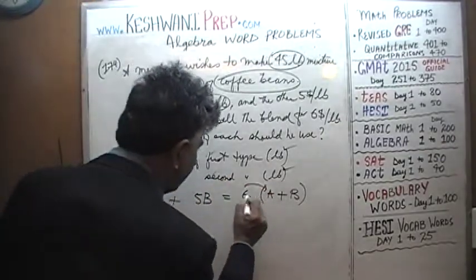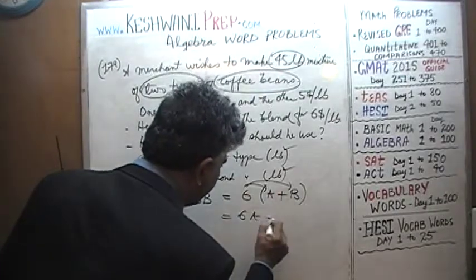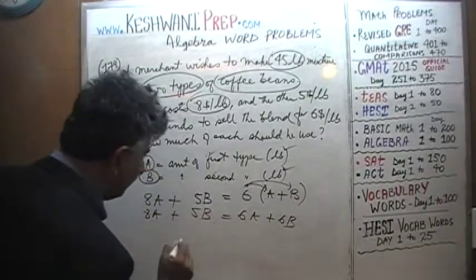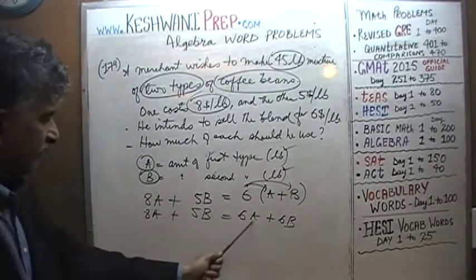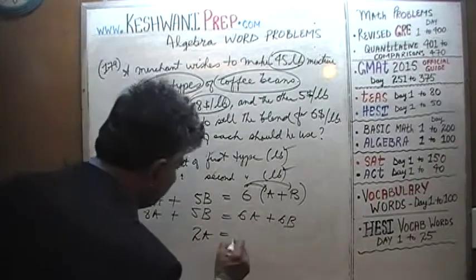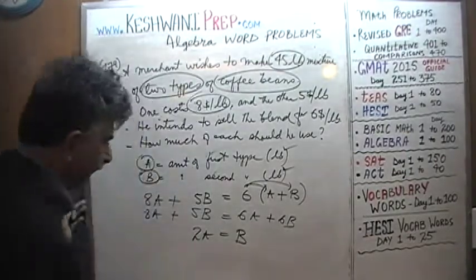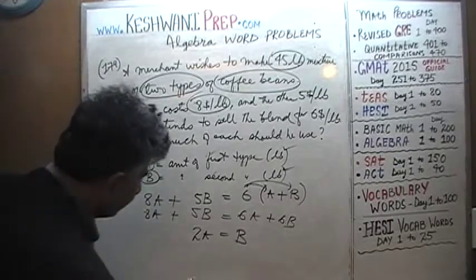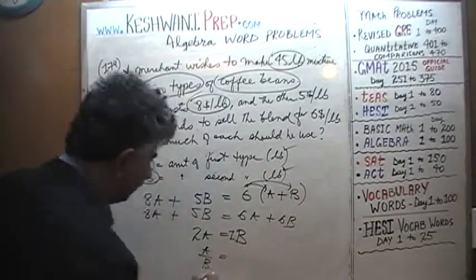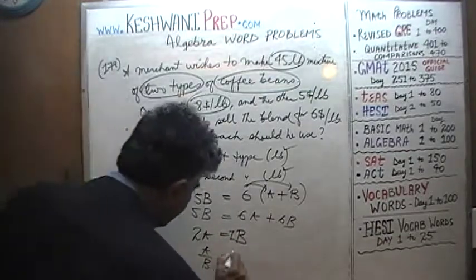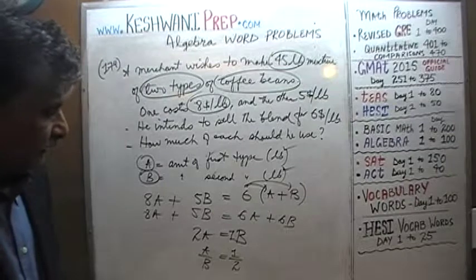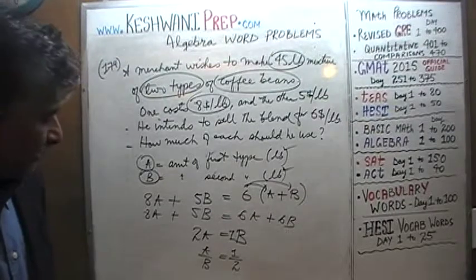Expanding the right side: 6(A + B) = 6A + 6B. So we have 8A + 5B = 6A + 6B. Bringing the A terms to one side and B terms to the other: 8A − 6A = 6B − 5B, which gives 2A = B. Therefore A/B = 1/2. This tells us we need to mix the two beans in a ratio of 1 to 2.